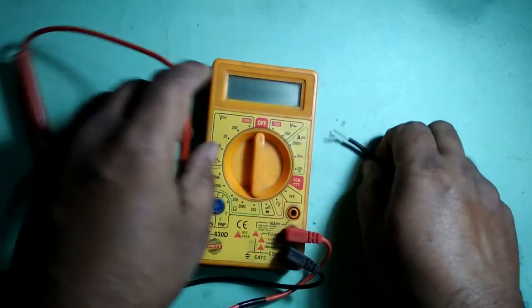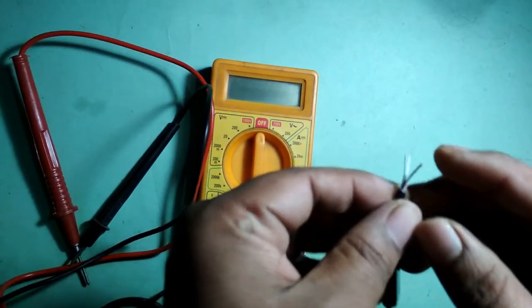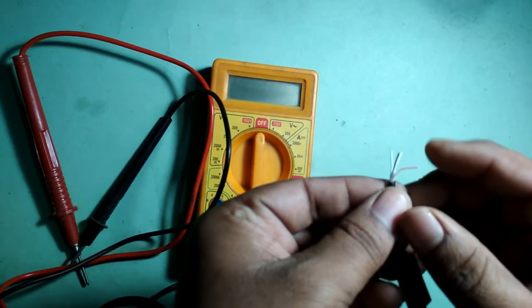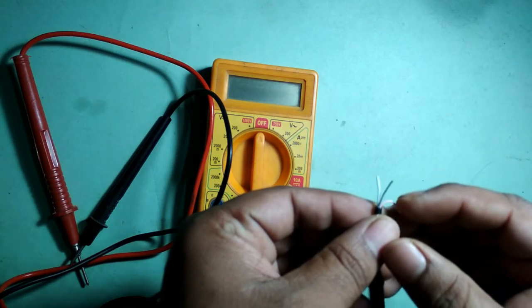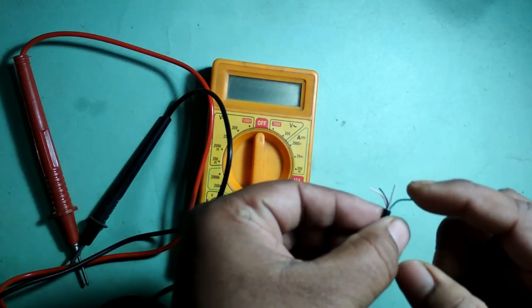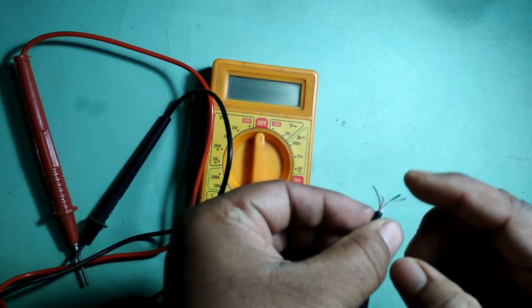Take a multimeter. You can see here the red one. Red one for positive and the black one for negative, and these two colors, green and white, are for data sharing.